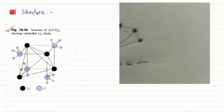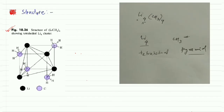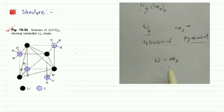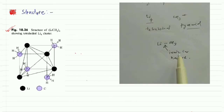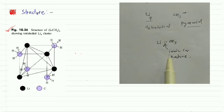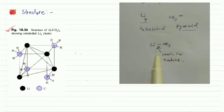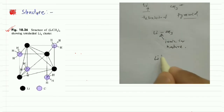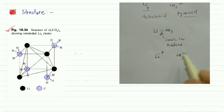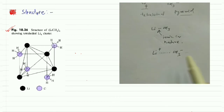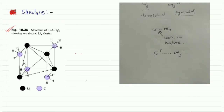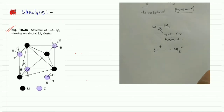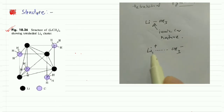Before discussing the structure further, the bond between lithium and CH₃ is actually ionic in nature. That means lithium would be positive (Li⁺) and CH₃ would be negative (CH₃⁻). They form an electrostatic interaction — an ionic bond — because this atom and that atom are attracted by electrostatic forces.